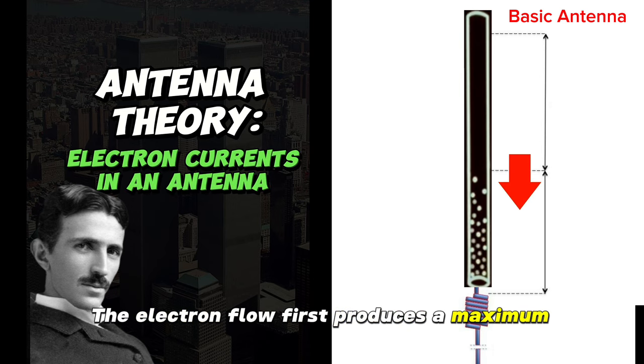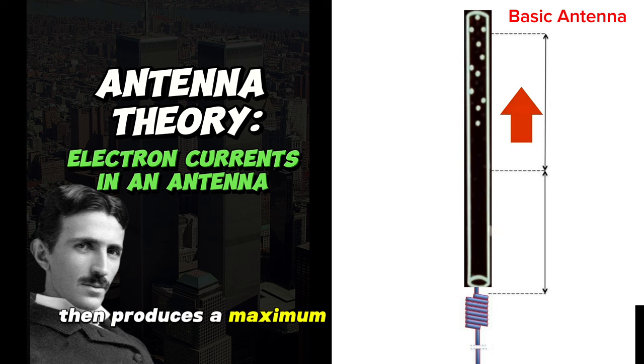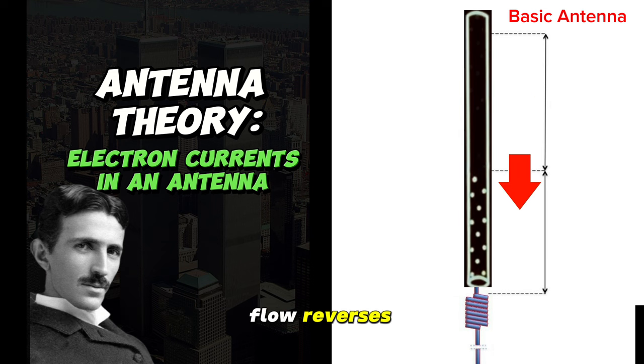The electron flow first produces a maximum concentration in this direction, reverses, then produces a maximum in the opposite direction. Flow reverses, maximum. This cycle repeats itself at the signal frequency.